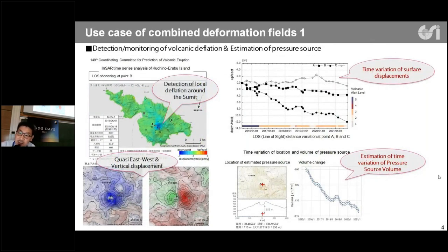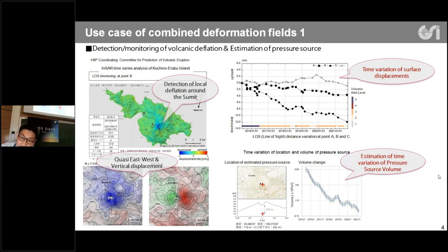Let me show you use cases of combined deformation fields in the Japanese case. The combined deformation field is useful to detect and monitor volcanic deflation, and also for estimation of pressure sources. This figure shows a deformation field at a volcanic island in Japan — you can see local deflation around the summit, and also the time series of the deflation. With these signals, we can estimate the time variation of pressure source volume.